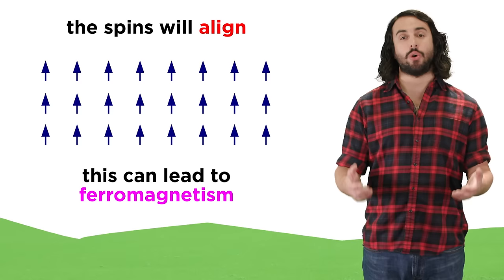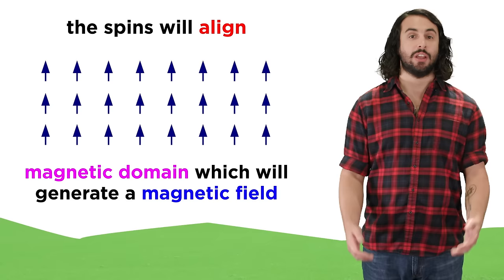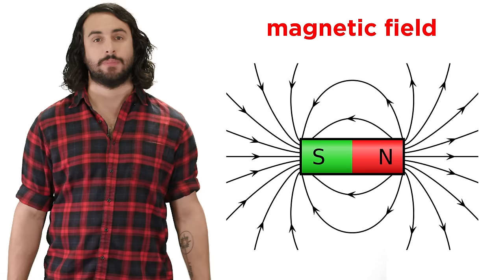In these materials, the atoms will adopt an orientation such that all of their net spins are aligned in parallel fashion, and this phenomenon, which we can refer to as a magnetic domain, will generate a magnetic field.